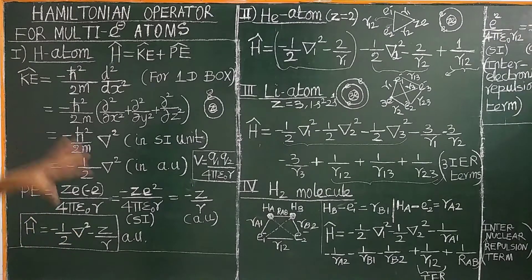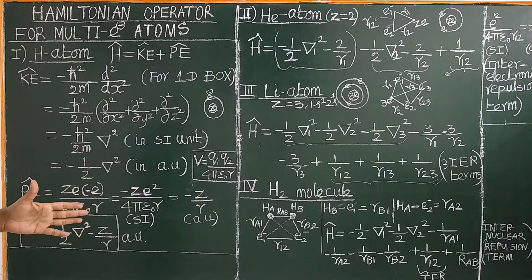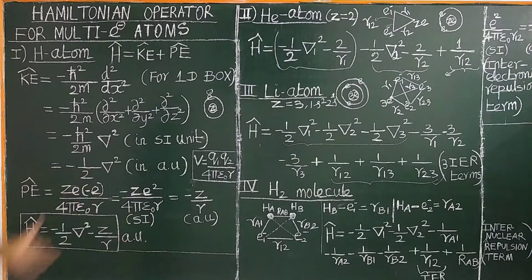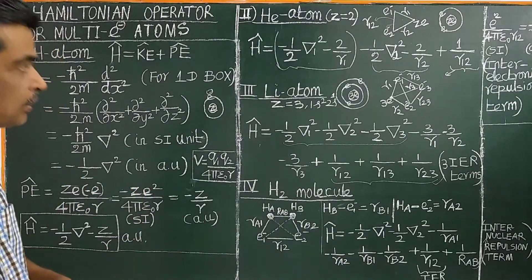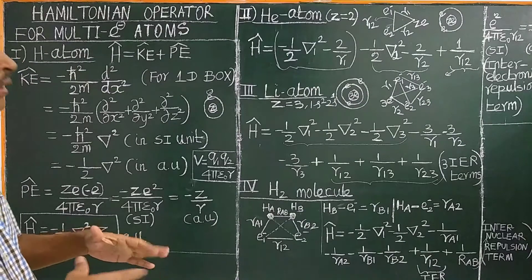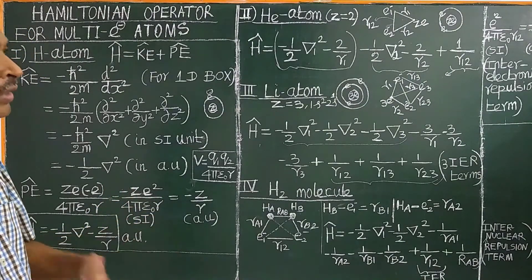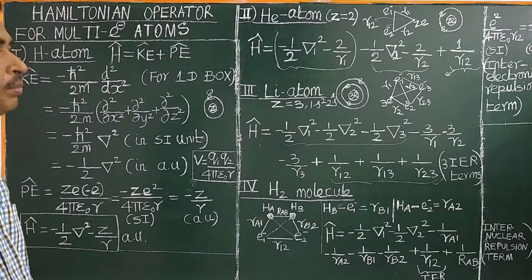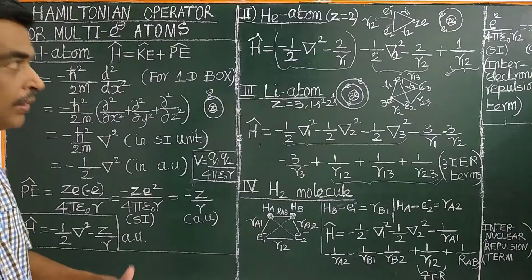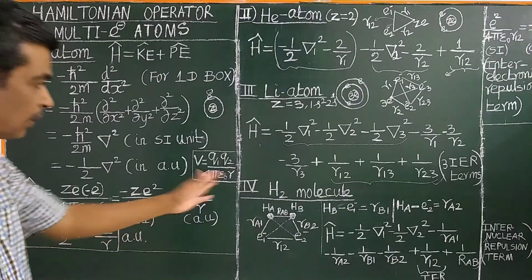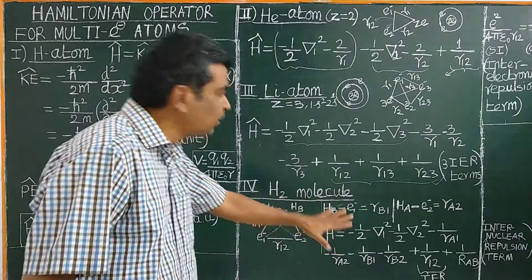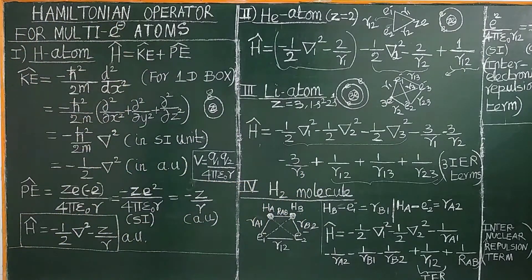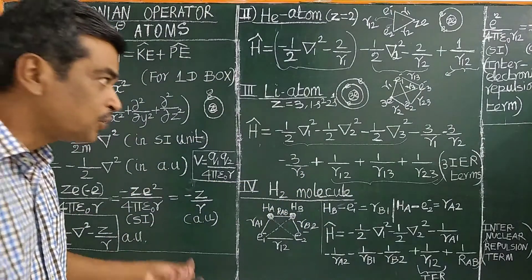By writing the Hamiltonian operator, the Schrödinger equation can be solved, similar to a particle in a one-dimensional or three-dimensional box. From the solutions, the atomic orbitals and wave functions are obtained. The molecular orbitals are wave functions obtained for a given molecule, and the energy levels give the electronic spectrum.